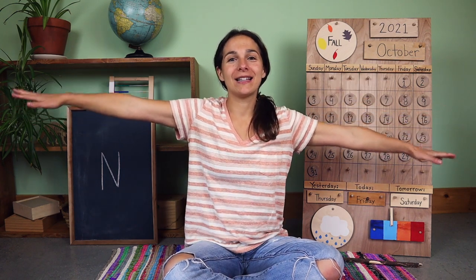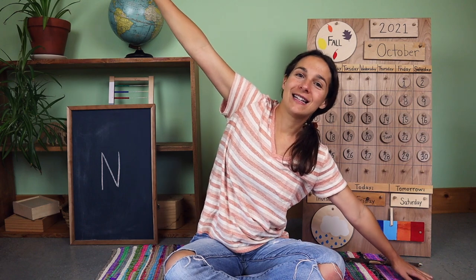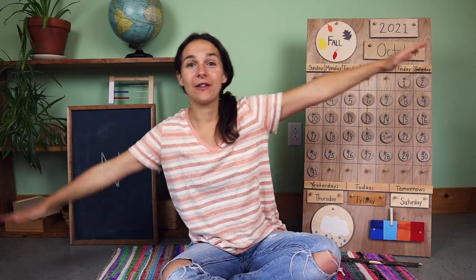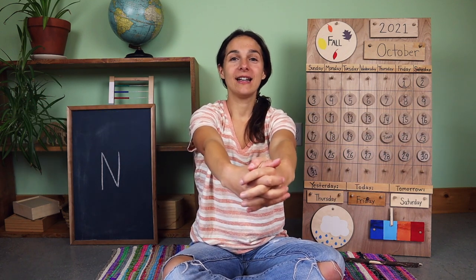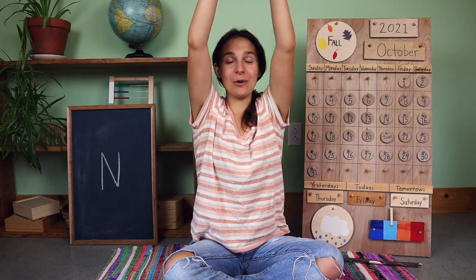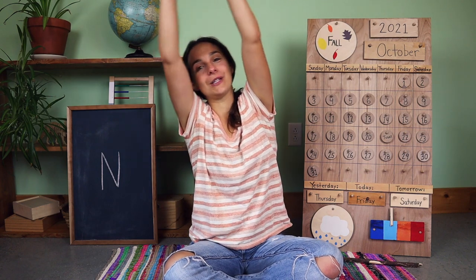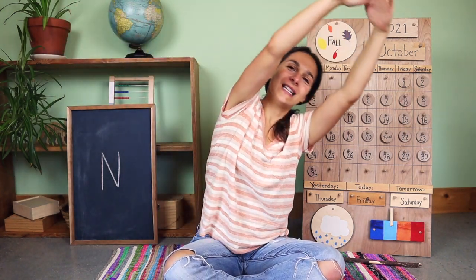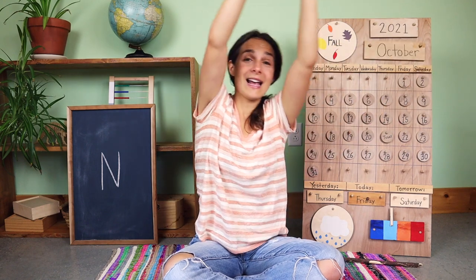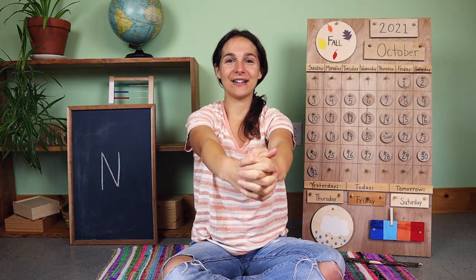Let's sing our good morning song together. Stretch your arms out like airplane wings. Fly to one side, over to the other side, fly back to the middle. Big stretch out in front. Now take that circle up over your head. We'll stretch on one side, over to the other side. Last stretch up at the top and now let's sing together.